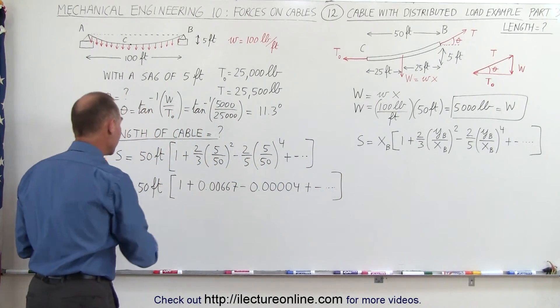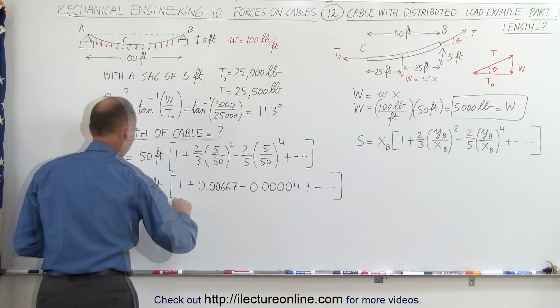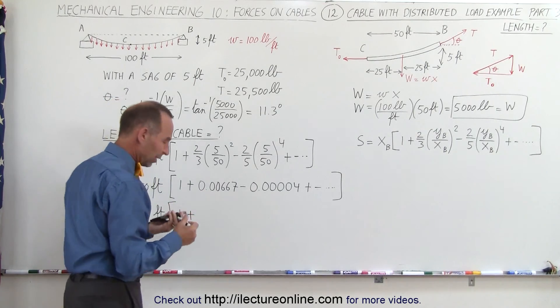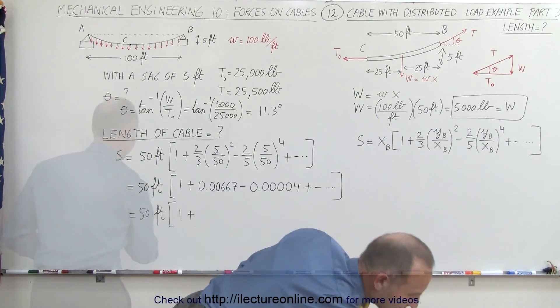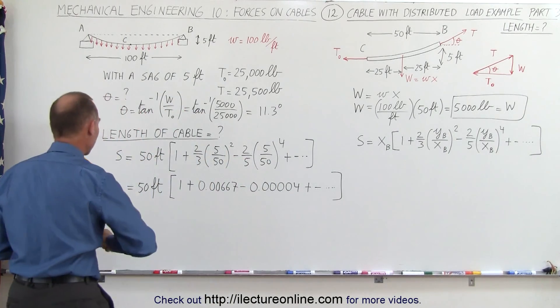And that would be plus, minus, and any additional terms you may want to consider. Let's now multiply that times 50 feet and see what we get. 50 feet times 1 plus, okay, well actually what I'm going to do, instead of rewriting the equation like that, let's just write, I'm going to multiply the terms together and see what we get.